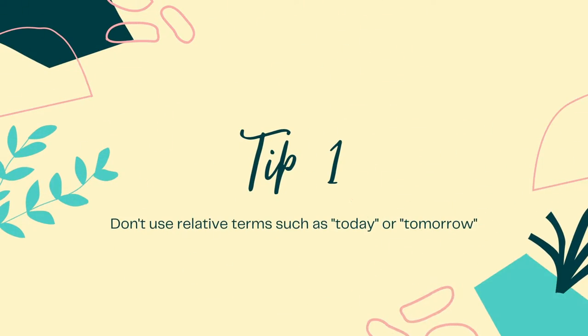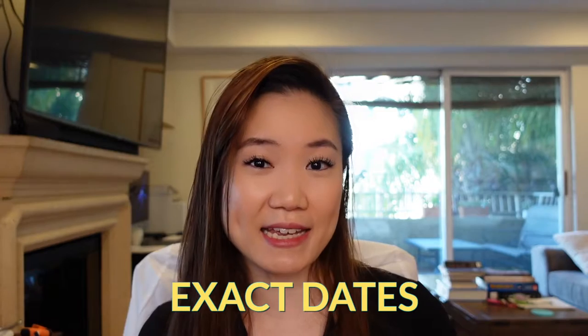Tip number one: don't use relative terms like 'today' and 'tomorrow,' because if you do that, the next day the note is no longer accurate. You want to make sure that you use exact dates, and that way you don't have to change it the next day or really ever.